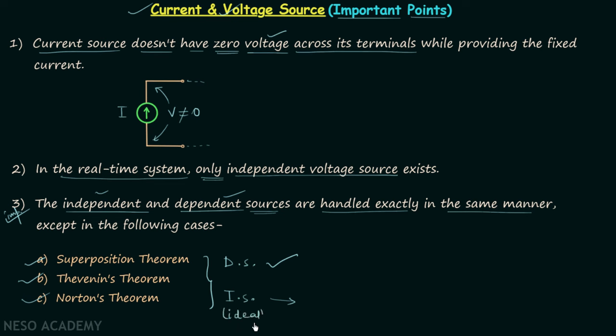We know that the ideal independent voltage source has zero internal resistance. This means if you have an ideal voltage source, then we will replace it by its internal resistance, which is equal to zero.